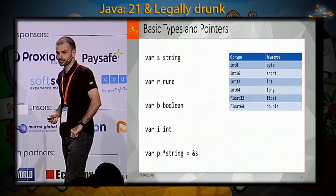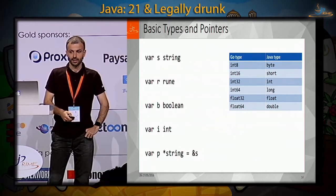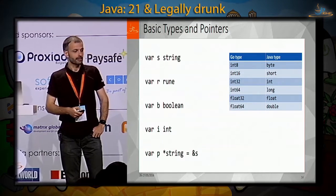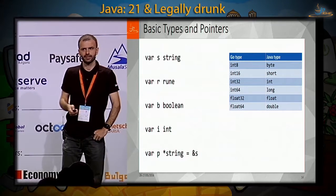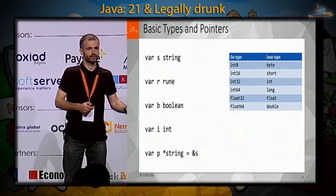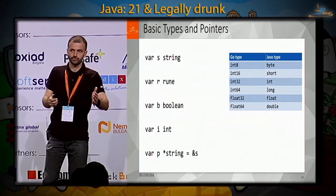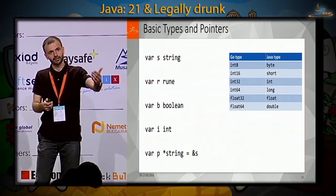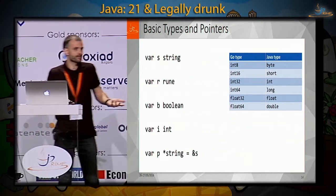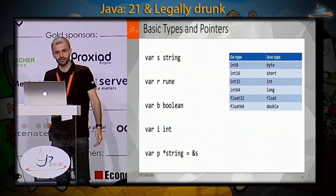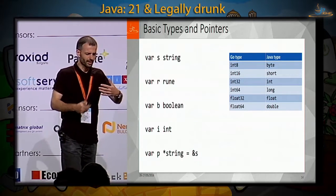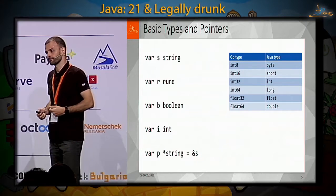More interestingly, Go also has pointers, similar to C and C++ and unlike Java. Here we are declaring a pointer to a string and initializing it with the address of the string s. However, unlike C and C++, there is no pointer arithmetic and you don't need to think about memory management because memory safety is built into the language. It's perfectly safe, for example, to create a variable in a function and return its address as the return value. Pointers in Go are actually very similar to references in Java — it's just a different syntax.